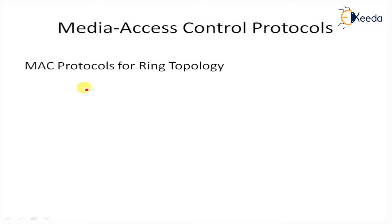Next, MAC protocols for ring topology. In ring topology, all nodes are arranged in a circular medium. The first protocol is token passing. Under the multi-channel token passing protocol, each node is equipped with W fixed transmitters and W fixed receivers, where W is the number of channels. Tokens allowing transmission are passed around the ring in round-robin order.